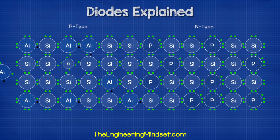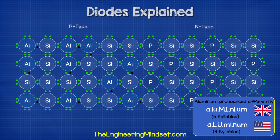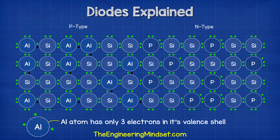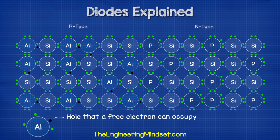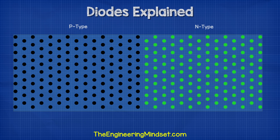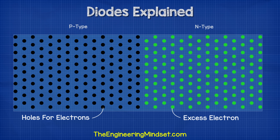With p-type doping we add a material such as aluminium. This atom has only three electrons in its valence shell, so it can't provide its four neighbors with an electron to share and one of them will have to go without. There is therefore a hole created where an electron can sit and occupy. So we now have two doped pieces of silicon — one with too many electrons and one with not enough.